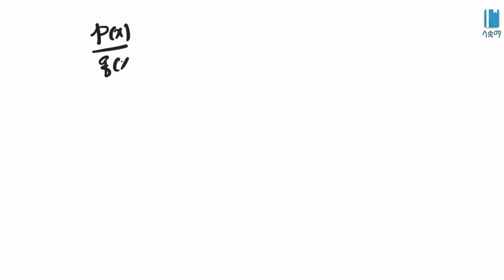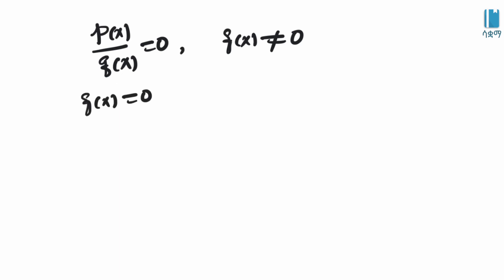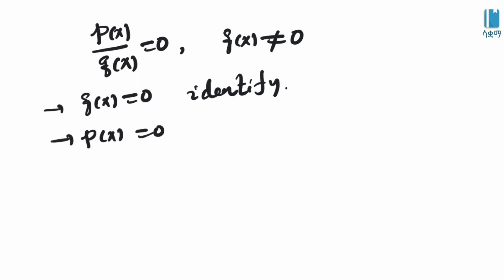A rational equation has the form p of x over q of x equal to zero. We need to identify where the denominator q of x is equal to zero, because those values of x are excluded from the solution.